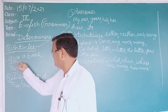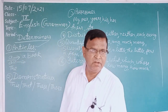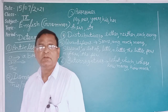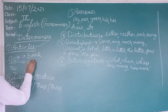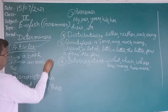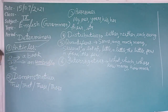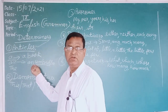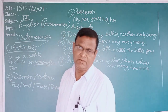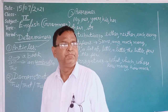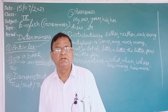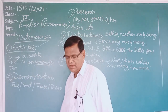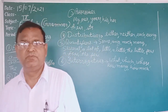'An' is used before a singular number, countable, and vowel-sounded word. Just like 'an umbrella' — the sound of the word umbrella starts with a vowel. It's about sound, not the letter. You need to check whether the word is consonant-sounded or vowel-sounded. So 'an' is used: an umbrella, an honest man.